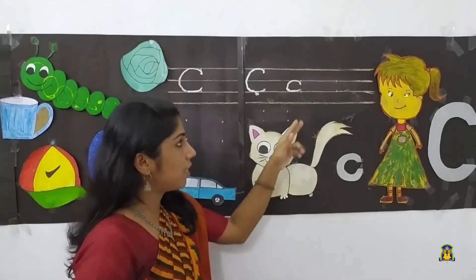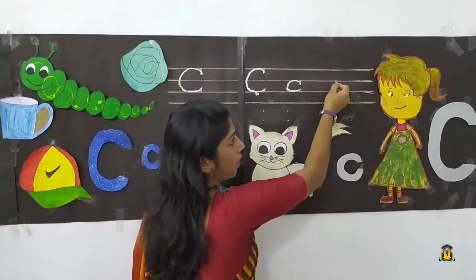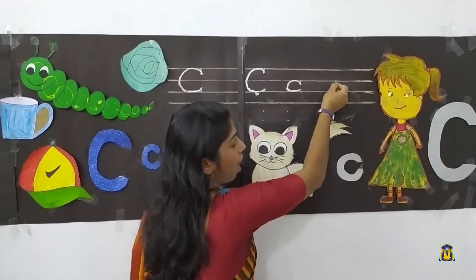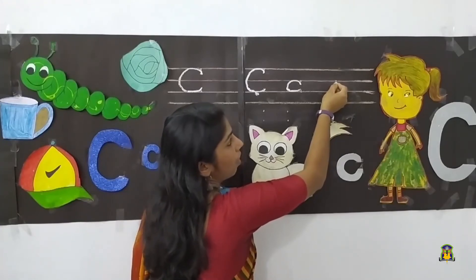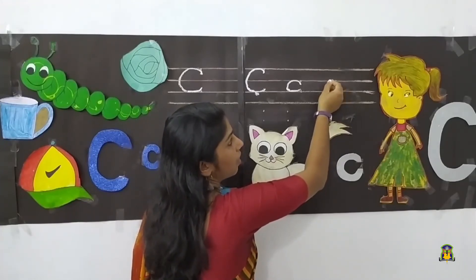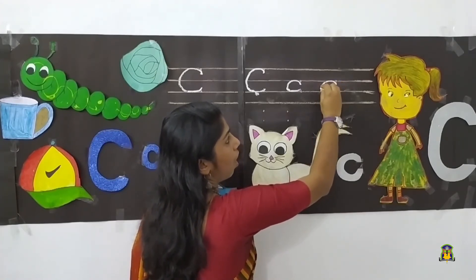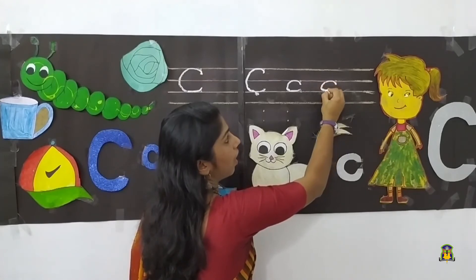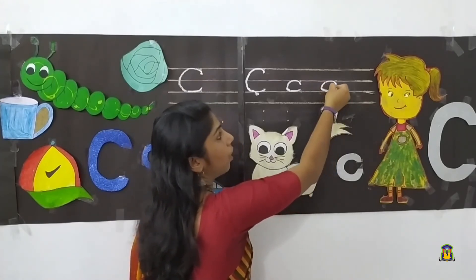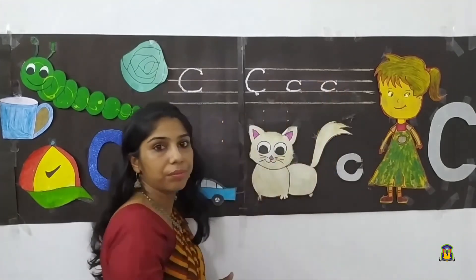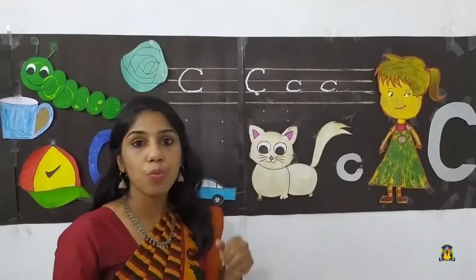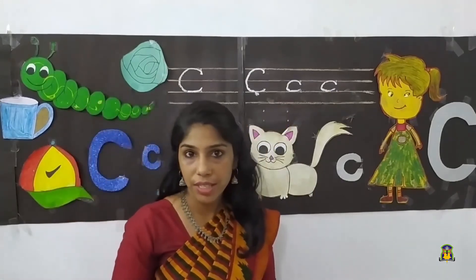Once again, keep pencil down. Slowly bring it up. Touch the second line. Make it curve. Down, touch the third line and go up a bit. This is small letter C.